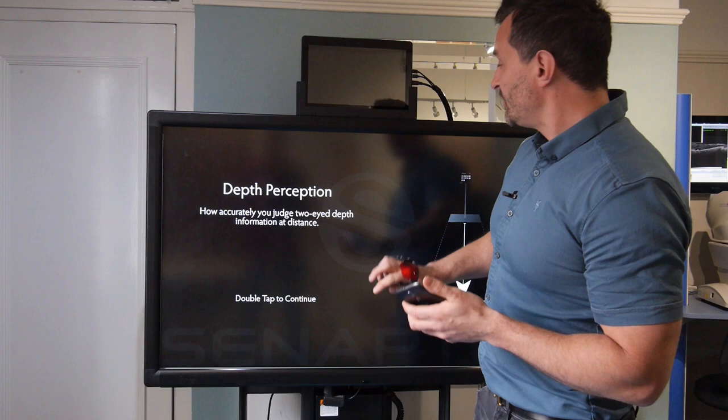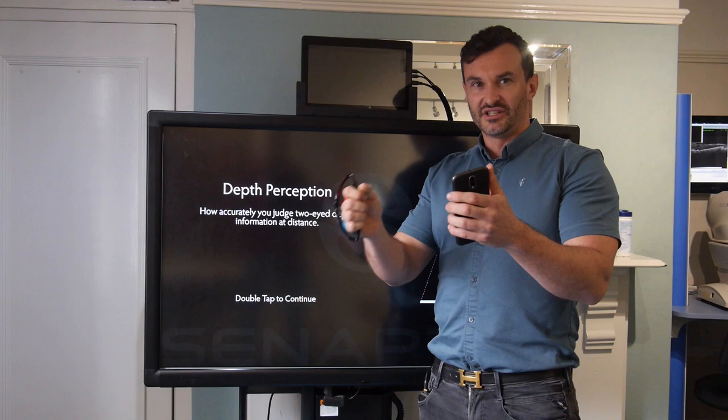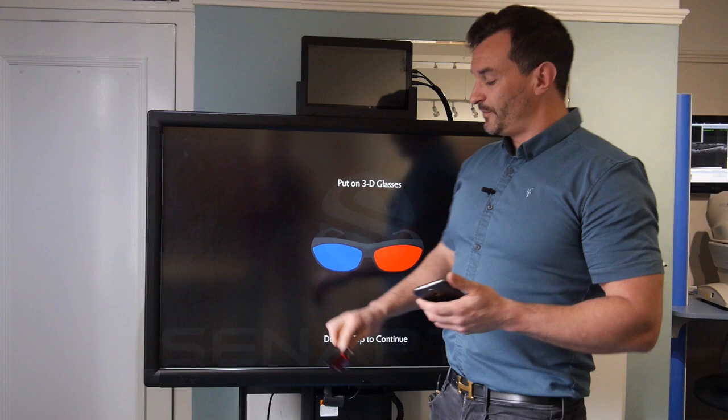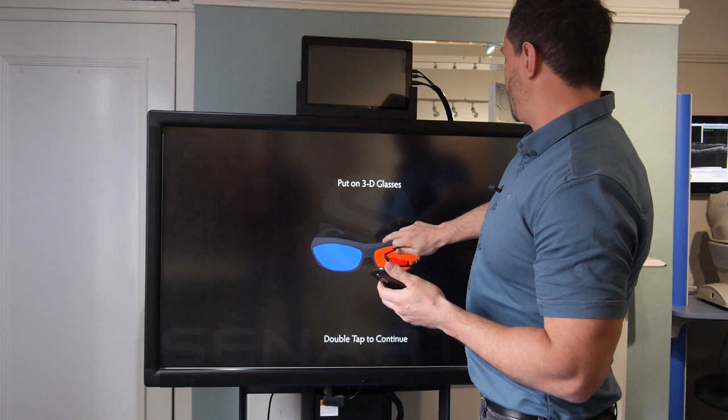So this is very much like the old school magic eye books of the 90s when you used to have to try and defocus your eyes and then all of a sudden a picture would come out of the page. So if we just activate this, in order to do the test, we need to put on these 3D stereoscopic glasses.